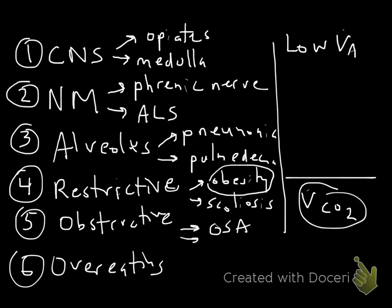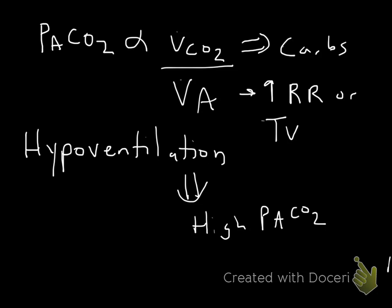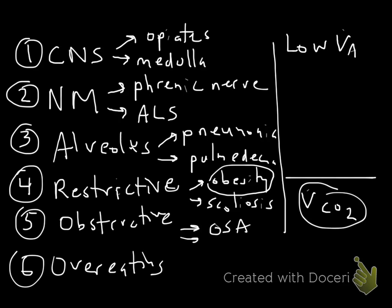So just to review, as we've said, there's this relationship of PaCO2 to the production of carbon dioxide in the body related to carbohydrate metabolism and the alveolar ventilation. And there are six big categories of things to consider in any patient that you identify with an elevated carbon dioxide because all of these things may be playing a role. I welcome your questions on the subject. Thank you very much.